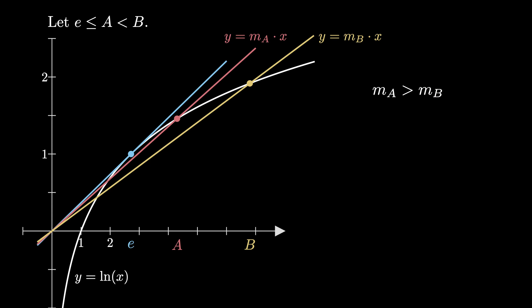The slope ma is the natural log of a over a, and the slope mb is the natural log of b over b. Therefore, 1 over a times the natural log of a is greater than 1 over b times the natural log of b.